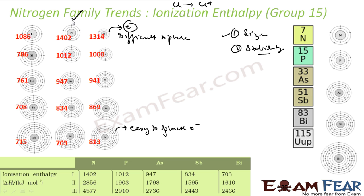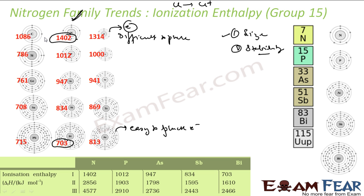For example, in Group 15, comparing nitrogen and bismuth — bismuth is bigger in size, so it is easy to pluck an electron, needing only 703 kilojoules per mole. But for nitrogen, you need more energy, also because nitrogen is half-filled. When going down the group, the only factor that plays a role is size.